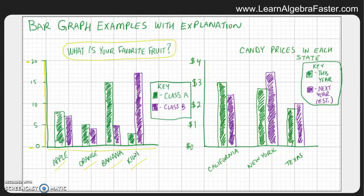The fourth key part of a graph is called the key — this little box right here that shows what each color represents on the graph. In green we see that classroom A's votes are shown, and the purple shows classroom B. These are two different classrooms, two different groups of people, and we're going to see what their favorite fruits are.